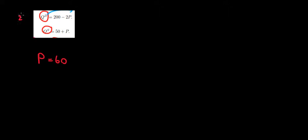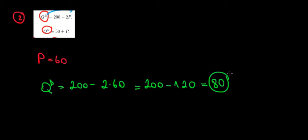And this is question two, by the way. The quantity demanded is going to be equal to 200 minus two times 60. So that's equal to 200 minus 120, that's equal to 80 units in demand.